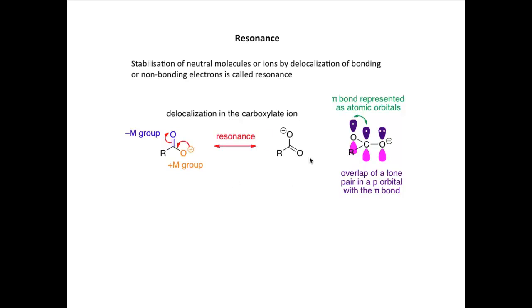When we do that, we end up with the other resonance form of the carboxylate ion, and we connect the two resonance forms using a straight double-headed arrow. In terms of orbitals, we can describe the interaction using a picture showing the p orbital containing the lone pair on oxygen, which interacts and overlaps with the pi orbital of the C=O double bond, represented here as atomic p orbitals on the carbon and oxygen. All three orbitals can line up and overlap to delocalize the negative charge.